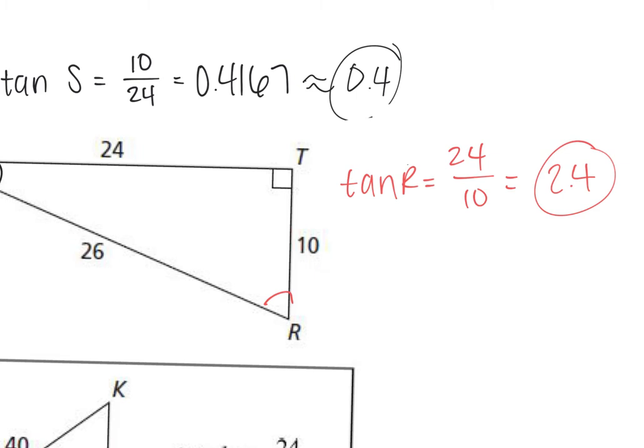I'm going to say this one more time. We are not taking the tangent of 10 over 24. The tangent of S is the ratio of the sides. Tangent is a ratio. If you wanted to find the angle, you would take the tangent inverse of 10 over 24. But we are not looking for the angle — we're just looking for the tangent. You guys have to make that distinction. The tangent is different from the actual angle.